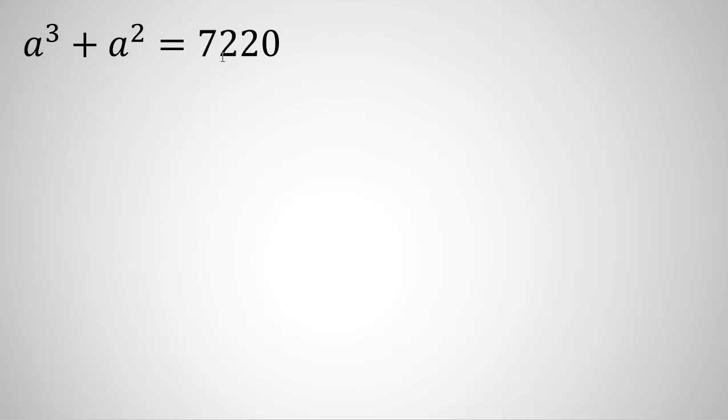a cubed plus a squared equals 7220. We want to find a, so first thing we want to do is factorize the left-hand side. We can write a to the three as a to the two plus one.